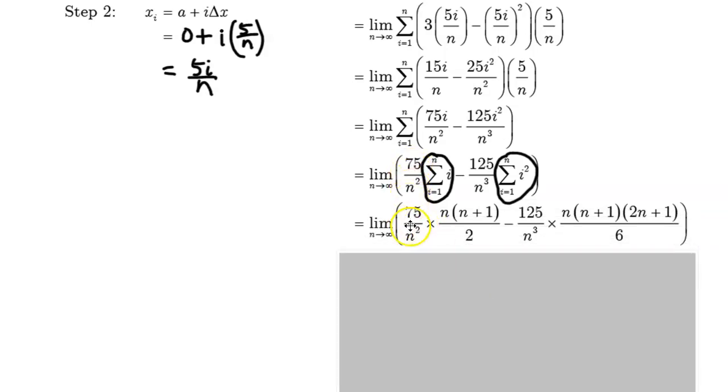So there's your 75 over n squared, and this piece right here, the sum of the first n natural numbers, is replaced by the expression that's equivalent to that, minus 125 over n cubed, multiplied by the expression that's equivalent to the sum of the first n squares. So that's all there.